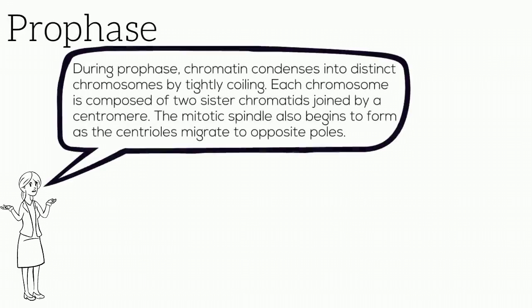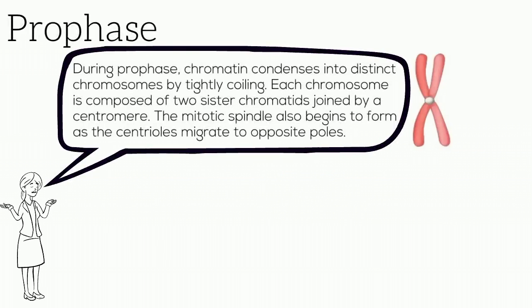During prophase, chromatin condenses into distinct chromosomes by tightly coiling. Each chromosome is composed of two sister chromatids joined by a centromere. The mitotic spindle also begins to form as the centrioles migrate to opposite poles.